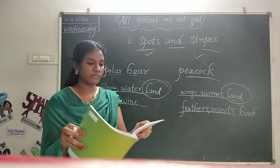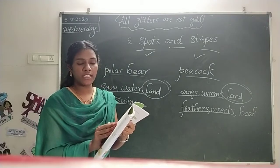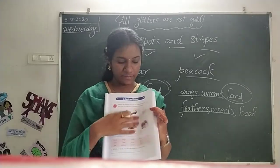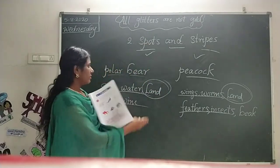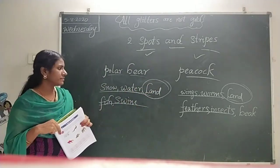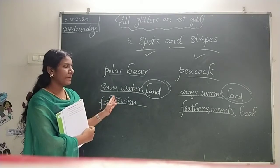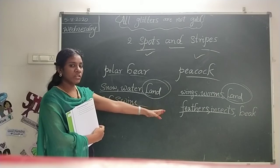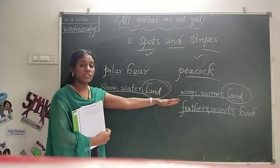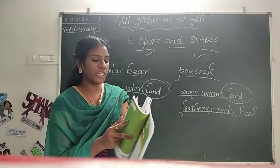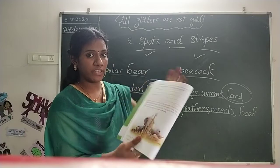After that, open page number 18. Choose any two animals from the given pictures. Write two common features and two different features between them. For example, using polar bear and peacock — both are living on land, so that is a common feature. But the polar bear can swim and live in snow while the peacock has feathers — those are different features. Write common features here and different features here.